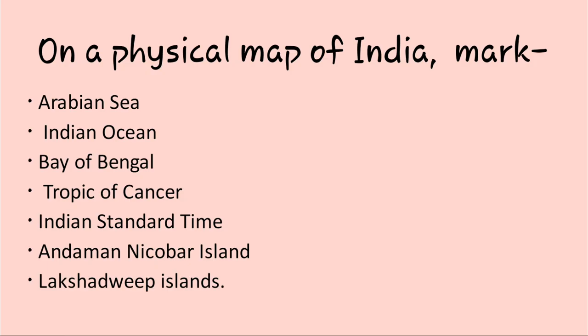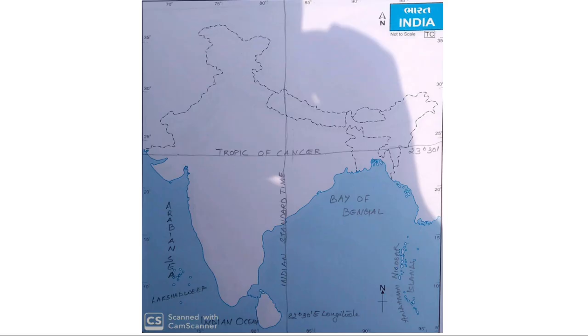The next question is: on a physical map of India, mark the Arabian Sea, Indian Ocean, Bay of Bengal, Tropic of Cancer, Indian Standard Time line, Andaman and Nicobar Islands, and Lakshadweep Islands. Now, with the help of a physical map, let us see how I have marked these.